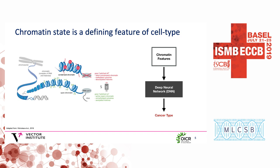At the core, the problem of identifying cancer type is actually a problem of identifying cell type. One of the defining features of cell type is chromatin — at a high level, chromatin describes how DNA is packaged within a cell. Essentially every cell in your body has approximately the same DNA, but phenotypically neurons are significantly different from skin cells. These differences can be explained in part by differences in chromatin state. Broadly, we can split chromatin into open or accessible regions and closed or inaccessible regions. If we had a way to assay chromatin features, we could develop a machine learning model to identify cancer type.